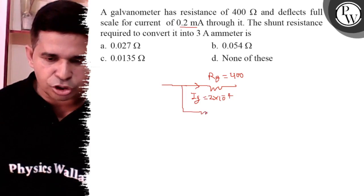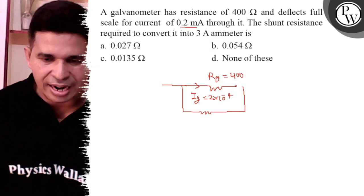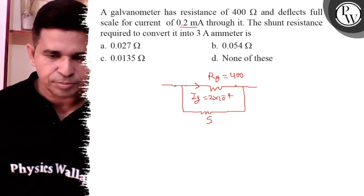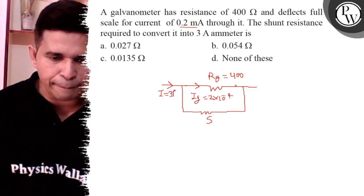Now a shunt resistance is connected in parallel to it, it is S. It is converted into the range 3 ampere ammeter.